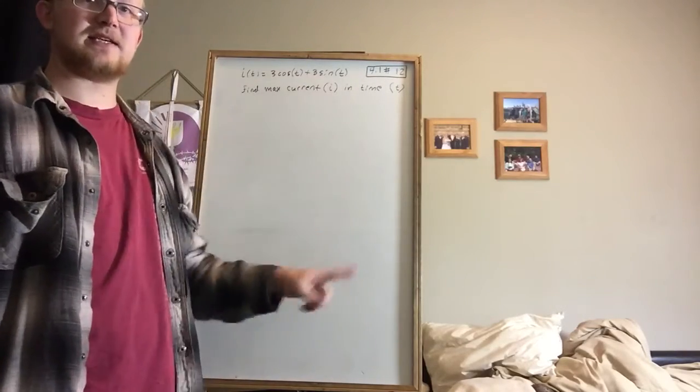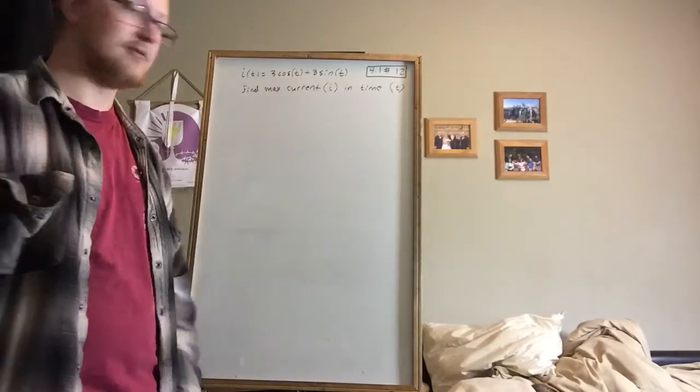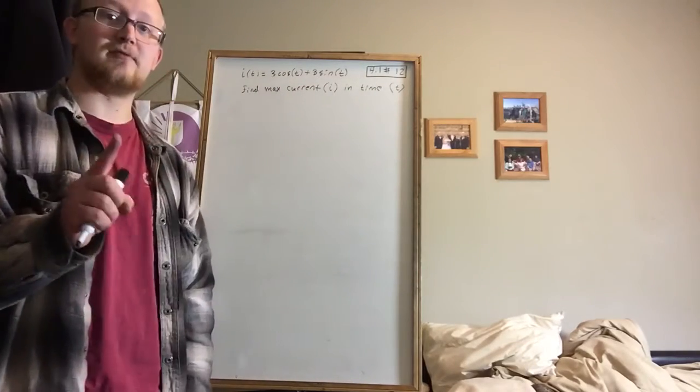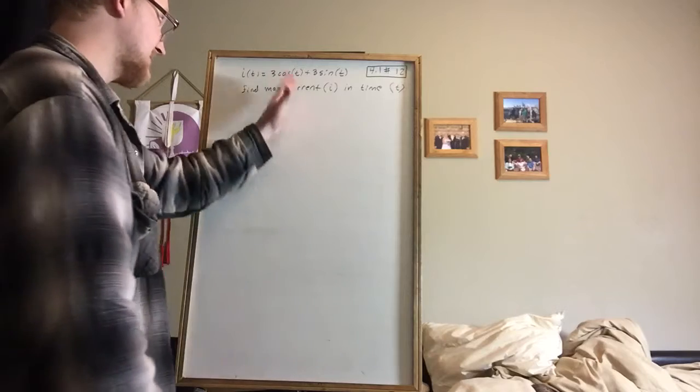But what it's asking for is the maximum i value. Well, each one of those maximums is going to have the same maximum current value. So if we can just solve for one of them, then we know all of them, because it's a cyclical function.